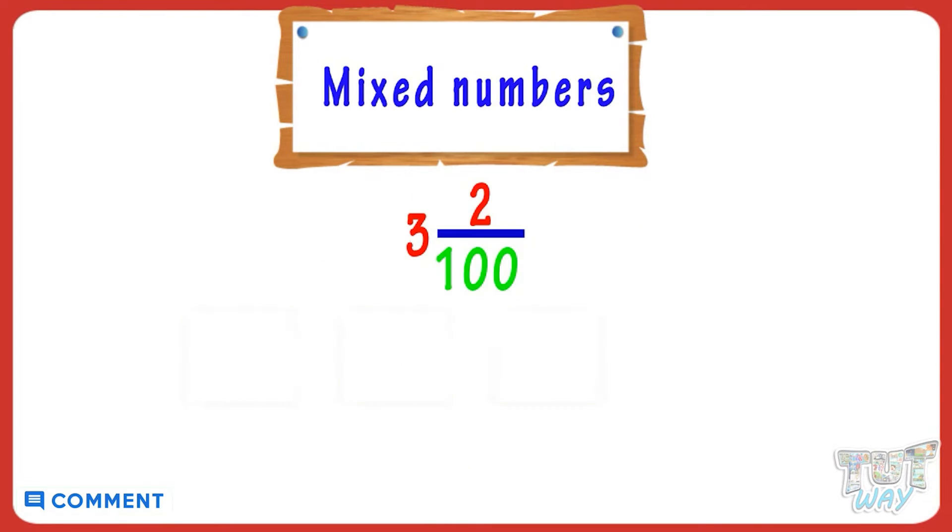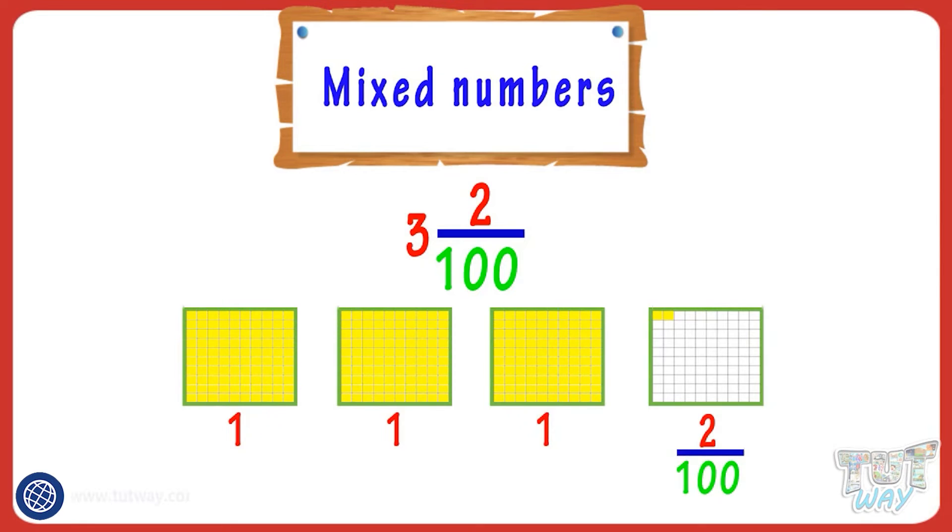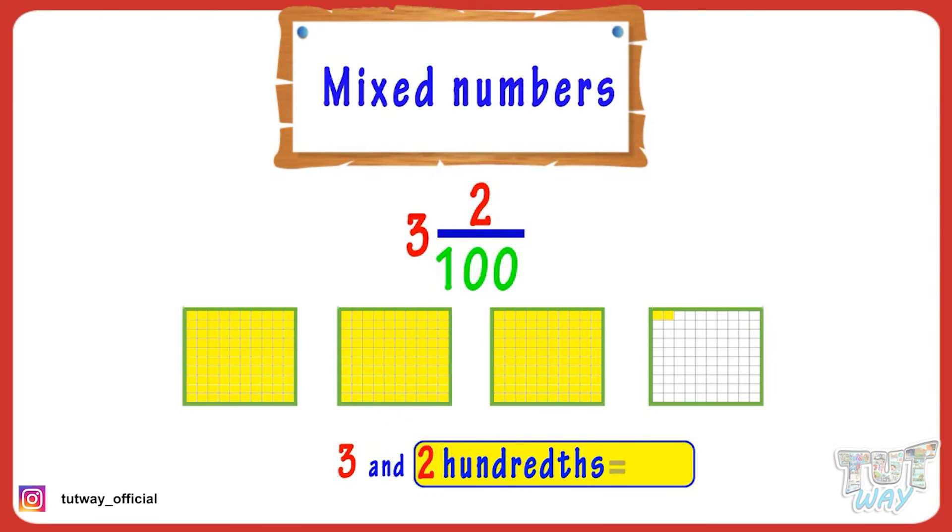It is 3 and 2 hundredths. Now let's write it in decimals. 2 hundredths is written as 0.02, so we will write it as 3.02. Let's take another example.